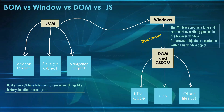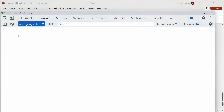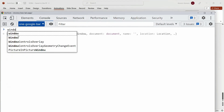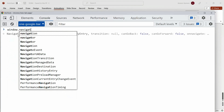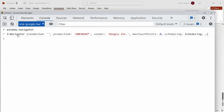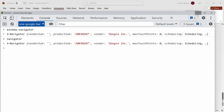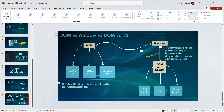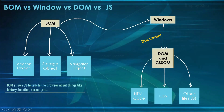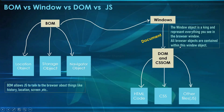Now suppose if I just want to access this navigator, I can write window.navigator and I will be getting the result. Let me show you — I have opened my console. Now to access that, I can write window.navigator and press Enter, and I will be getting the result. Without writing window, I can directly write navigator and I am going to get the same result. All browser objects are contained within this window object and we can easily access that.